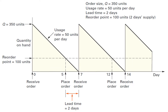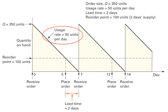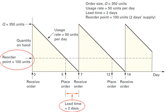This figure illustrates several inventory cycles. A cycle begins with the receipt of an order of Q units, which are withdrawn at a constant rate over time. When the quantity on hand is just sufficient to satisfy demand during lead time, an order for Q units is submitted to the supplier. Because it is assumed that both the usage rate and the lead time do not vary, the order will be received at the precise instant that the inventory on hand falls to zero. Thus, orders are timed to avoid both excess stock and stockouts.